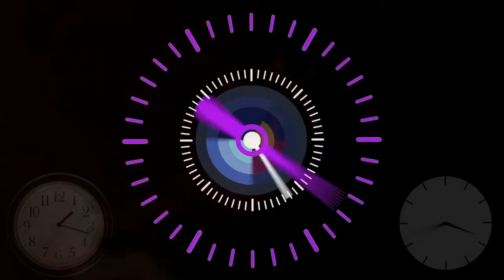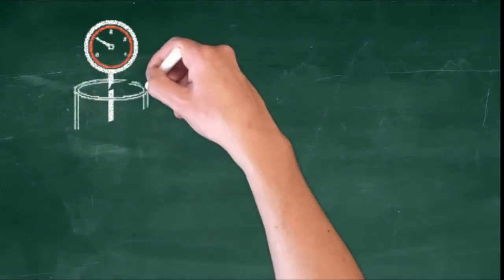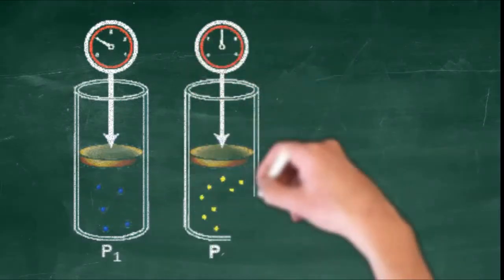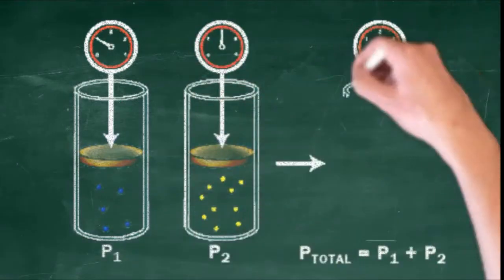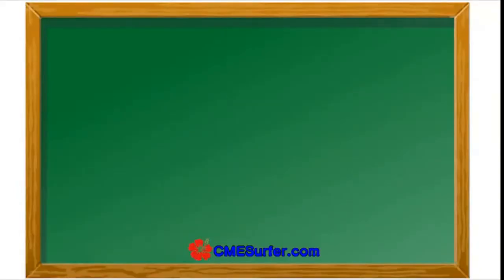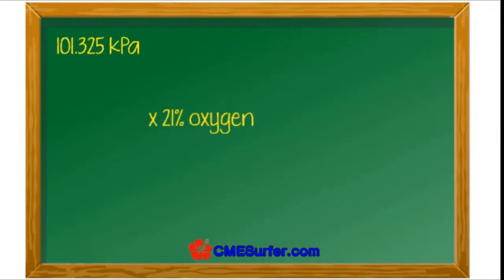Dalton's law is pretty simple. It just states that the total air pressure is made up of the partial pressures of the component gases in the air. For example, a typical outdoor air mass at sea level is 21% oxygen. The total pressure is very close to 100 kPa and the portion of that pressure contributed by oxygen is very close to 21 kPa.